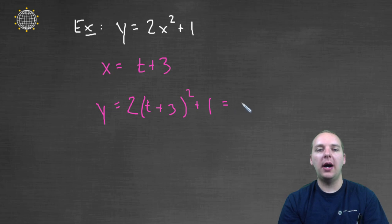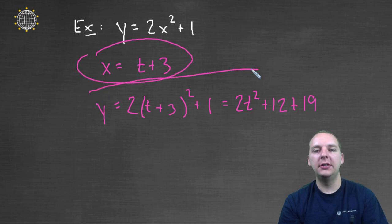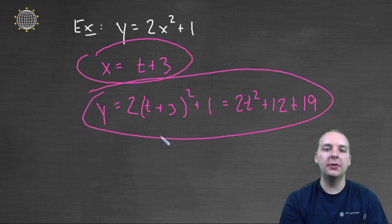And so if you foiled that and simplified and all those good things, you would get y equals 2t squared. And I'll spare you the algebra, let's see, plus 12t, let's see, plus 19 I believe if I did my algebra correctly. And you can check my math on that. But here we have a parametrization that's different than the first two.